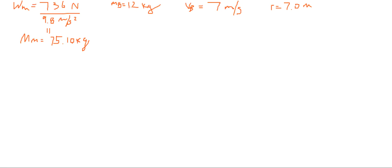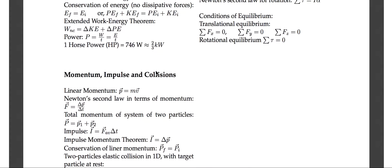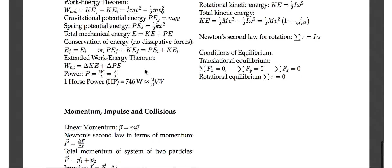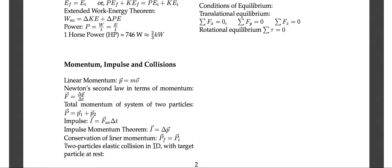And now we can use conservation of momentum, which states that the final momentum is equal to the initial momentum. There are two particles in this system: p1 is going to be the man, and p2 is going to be the book. The momentum is equal to the mass times the velocity.